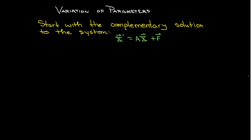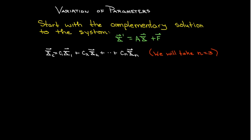Let's start with a complementary solution of our system x prime equals Ax plus f. We're only going to focus on the solution to the homogeneous equation, and we know that has a fundamental set x1, x2, up to xn. From now on, we're just going to work with n equals 3, which makes all of the writing simpler to understand.